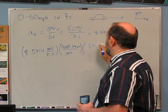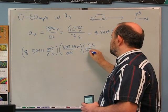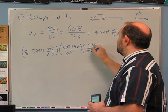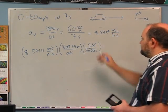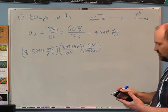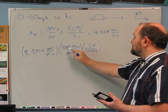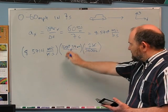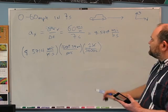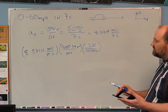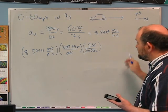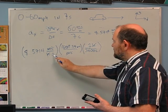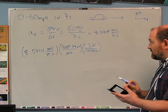There is 1 hour in 3600 seconds. I want to get rid of the hour, so the hour goes on top. I'm just multiplying by 1: 1609.34 meters equals 1 mile, and 1 hour equals 3600 seconds. I'll be left with meters over seconds over seconds — meters per second squared.